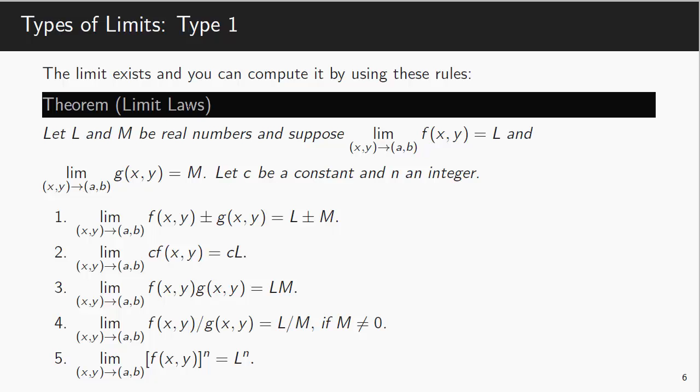So one of the things you might remember from earlier calculus courses is there's different kinds of limits. So in this case, let's talk about three types. So type 1. The limit exists and you can compute it using the rules. So let's say you've got two functions. This function limit as (a,b) is equal to l. This limit as (x,y) approaches (a,b) is equal to m. So you've got two functions.